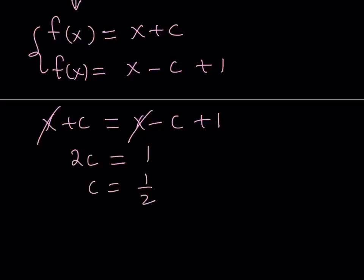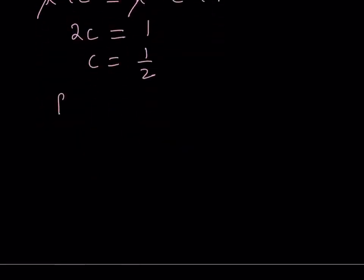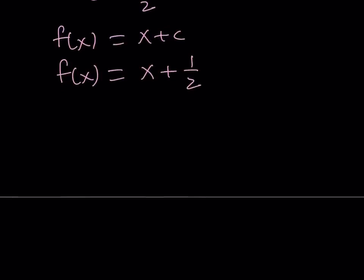Which is kind of nice, because you've got two expressions for f of x, and they're equivalent. So it doesn't matter which one. I'm going to use the top one, since f of x can be written as x plus c. And now we know that c is equal to 1 half. I can basically write f of x as x plus 1 half. So this will be the solution to our equation.